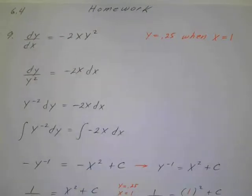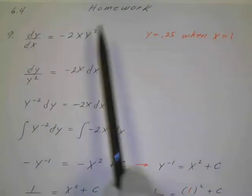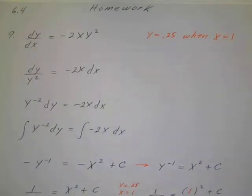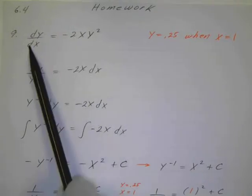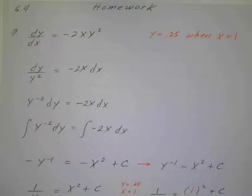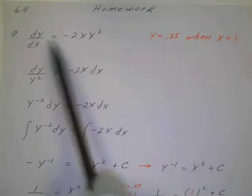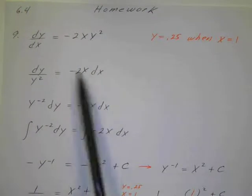So again, we separate the variables. So I'll put with a dy, 1 over y squared. And then I can put the dx up in front. All right, then I've got negative 2x dx.